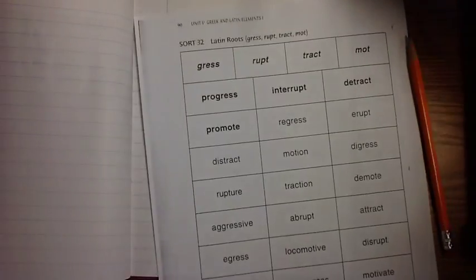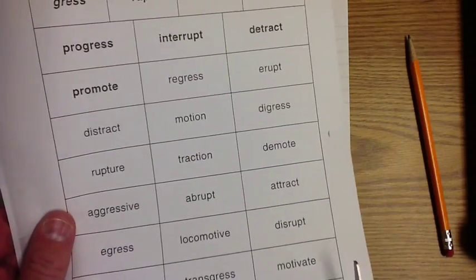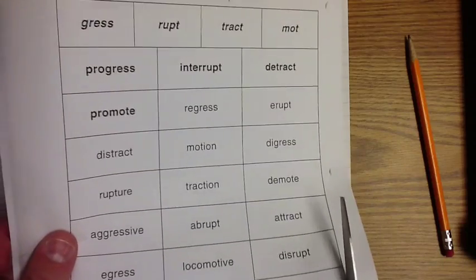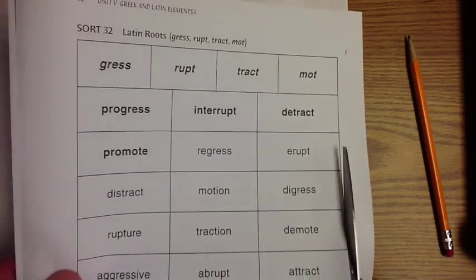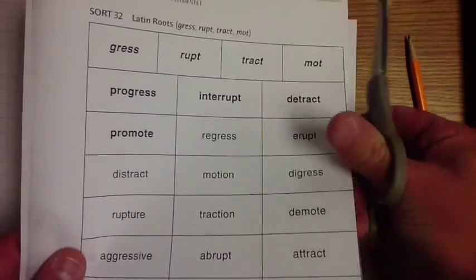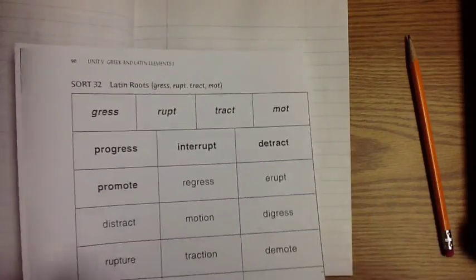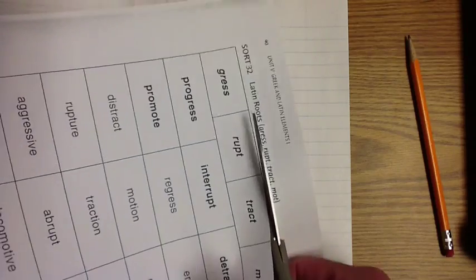So, let's get these cut out. It looks like we're doing some Latin roots today. And it looks like we're doing grass, rupt, tract, and mot. Mot? Mote? Mot? I don't know. Interesting.